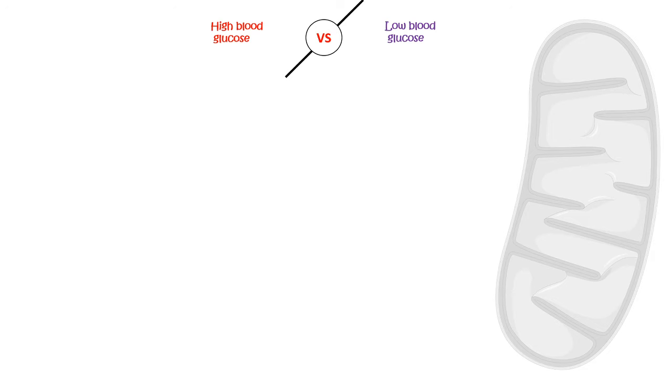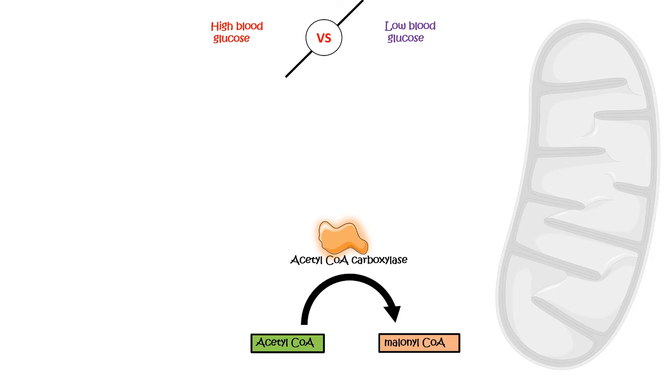Let us look at the cytoplasm, which is the site for fatty acid anabolism, and compare two situations: high blood glucose and low blood glucose. High blood glucose is indicative of a fed state, whereas low blood glucose means a fasted state. In the high blood glucose condition, acetyl-CoA carboxylase is the rate-limiting enzyme for fatty acid biosynthesis, converting acetyl-CoA into malonyl-CoA, which is then utilized for fatty acid biosynthesis.